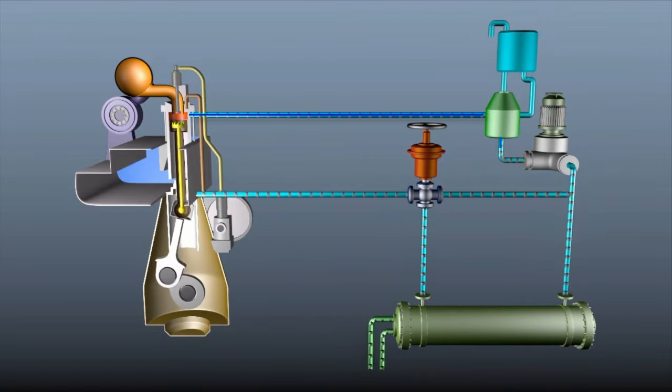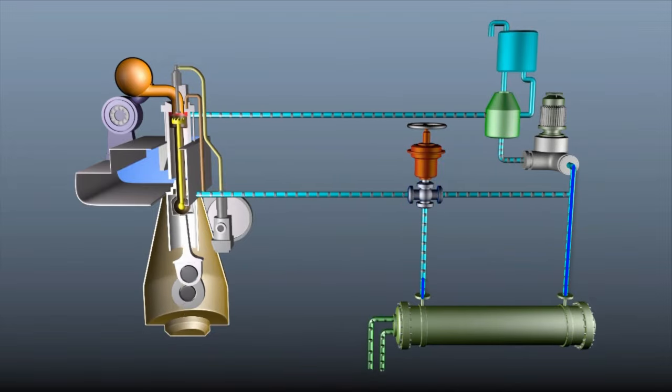In this system, fresh water is used in a closed circuit to cool down the main engine. The fresh water returning after absorbing the heat and cooling the machinery is further cooled by sea water in the sea water cooler.